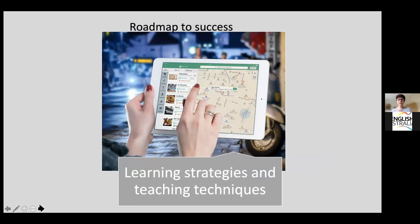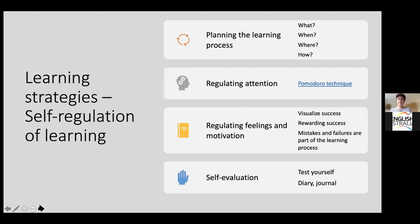Learning strategies and self-regulation are really key to success for students with specific learning difficulties. There are four stages to consider. First is planning the learning process — what, when, where, and how students are going to learn. Even students who have been through 10-15 years of education may still not be efficient planners of their learning process, so it's really worth spending time on this. Second is regulating attention — teaching students to focus and make good use of their time.